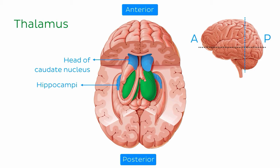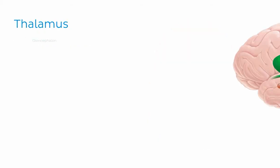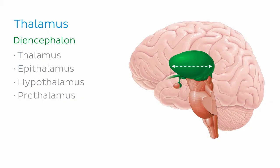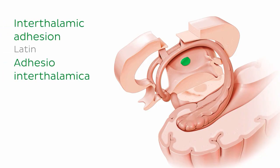Now let's move on to our main event — the thalamus, also sometimes referred to as the dorsal thalamus. It is a paired, or bilateral, structure forming the largest part of the diencephalon. The diencephalon is formed from the thalamus, the epithalamus, the hypothalamus, and the pre-thalamus. The thalamus is elongated along the anteroposterior axis and is often described as roughly egg-shaped, measuring approximately 4 centimetres in length. The medial surfaces of the thalami are usually connected by an interthalamic adhesion, and it is not known whether any fibres cross over to the other side, which is why we don't call it a commissure.